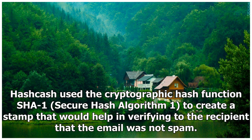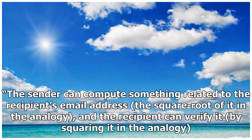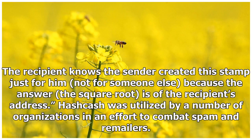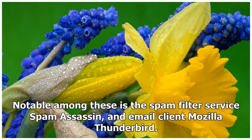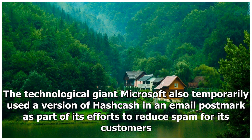Hashcash could be added to emails through a plugin. Hashcash used the cryptographic hash function SHA-1 (Secure Hash Algorithm 1) to create a stamp that would help verify to the recipient that the email was not spam. The sender can compute something related to the recipient's email address, and the recipient can verify it by checking it in return — the recipient knows the sender created this stamp just for them, not for someone else. Hashcash was utilized by SpamAssassin, Mozilla Thunderbird, and temporarily by Microsoft as an email postmark, though the postmark is now deprecated.